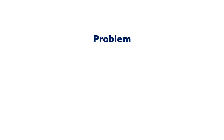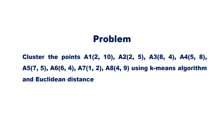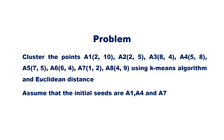Let us now discuss an example. Consider the points A1(2,10), A2(2,5), A3(8,4), A4(5,8), A5(7,5), A6(6,4), A7(1,2), A8(4,9), using the k-means algorithm and Euclidean distance. Assume that the initial seeds or cluster centroids are A1, A4, and A7. Perform the first iteration.